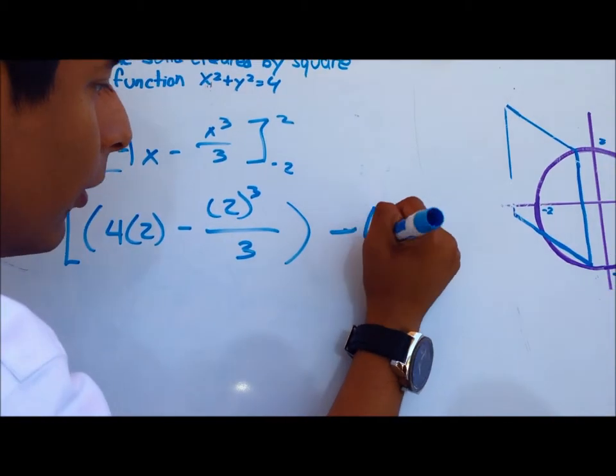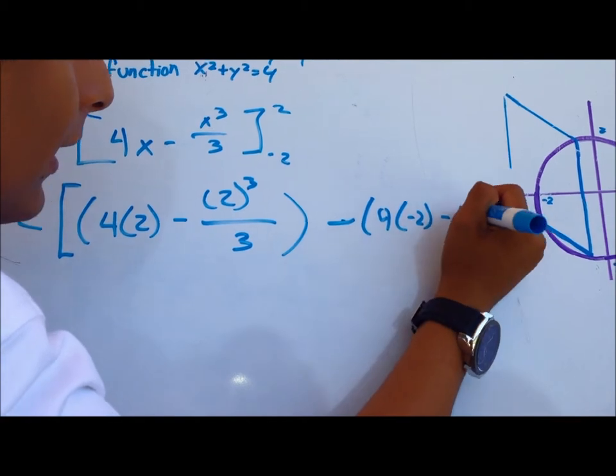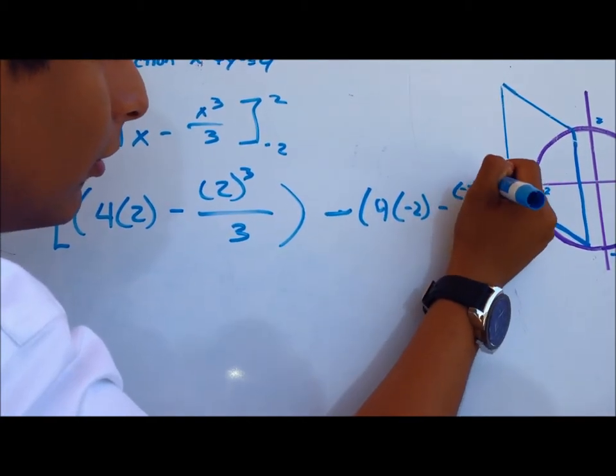Which would be 4 times negative 2 minus negative 2 cubed over 3.